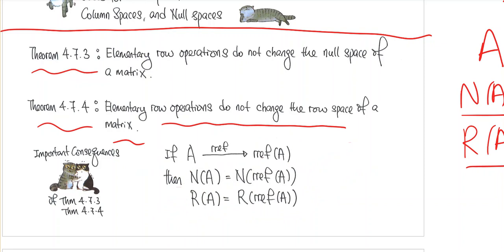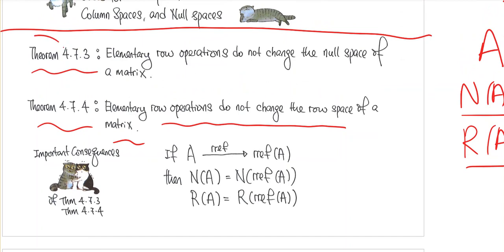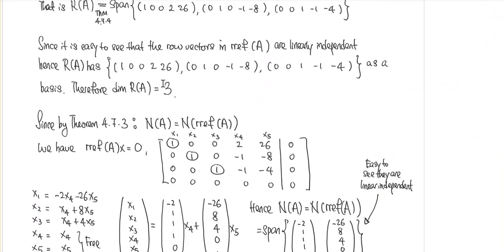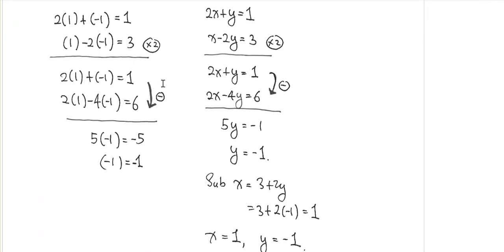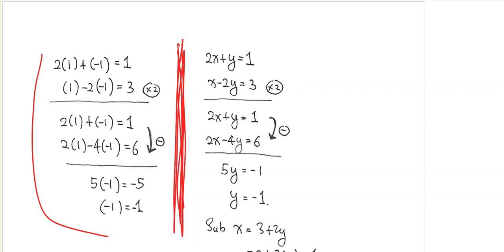You might be curious why this is true. Let's look at why row operations don't change the null space — theorem 4.7.3. This is not a full rigorous proof, but it motivates why elementary row operations would not change the null space of a matrix. Let's look at this computation on the left-hand side. These are very simple computations; you can check that these are all true.